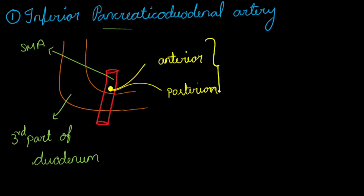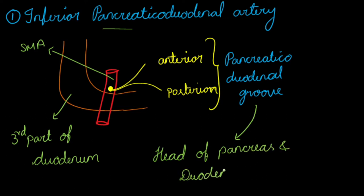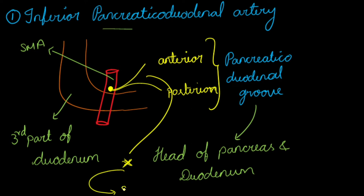Both of these arteries run in the pancreaticoduodenal groove and supply the head of the pancreas and the duodenum. Finally, the inferior pancreaticoduodenal artery gets anastomosed with the superior pancreaticoduodenal artery.